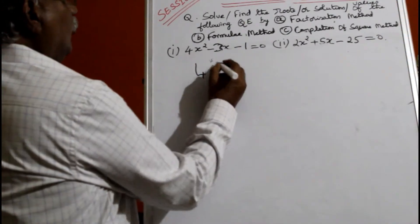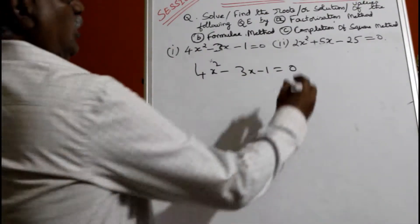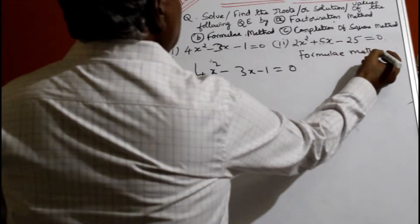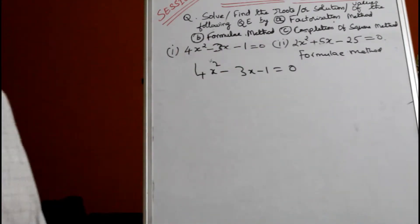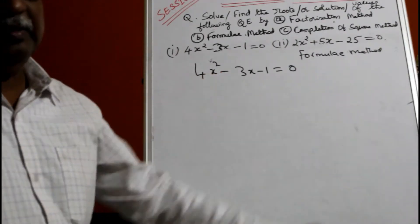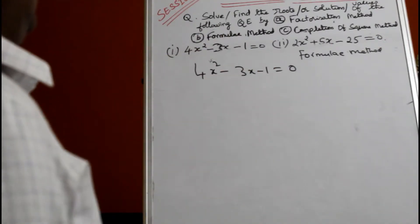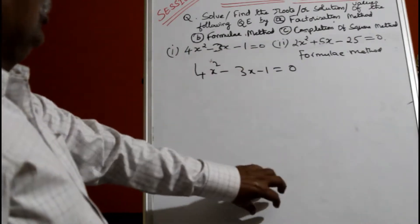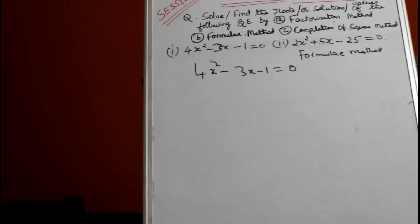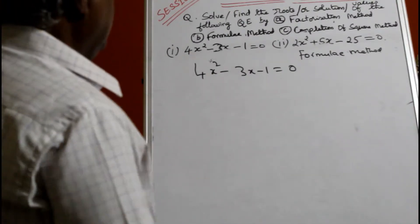Formula method: 4x² minus 3x minus 1 equal to 0. Formula method is done when the middle term cannot be split or is very hard to split. Sometimes you can't split the middle term itself, then you must go to the formula. You get decimal answers. But for these kinds of sums you can also do the formula method. 4x² minus 3x minus 1.